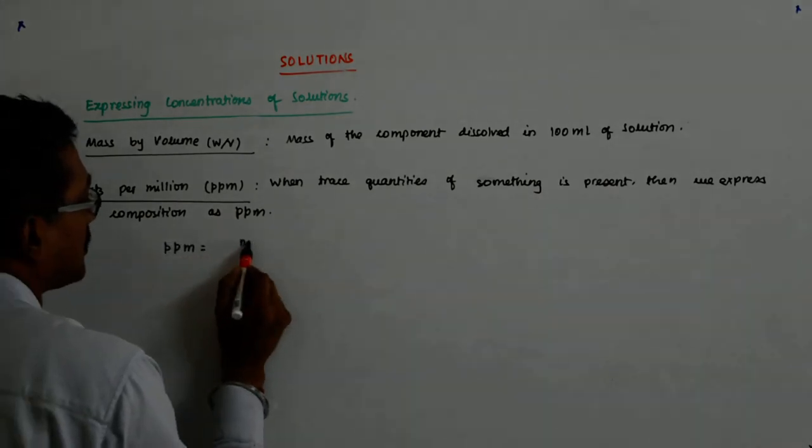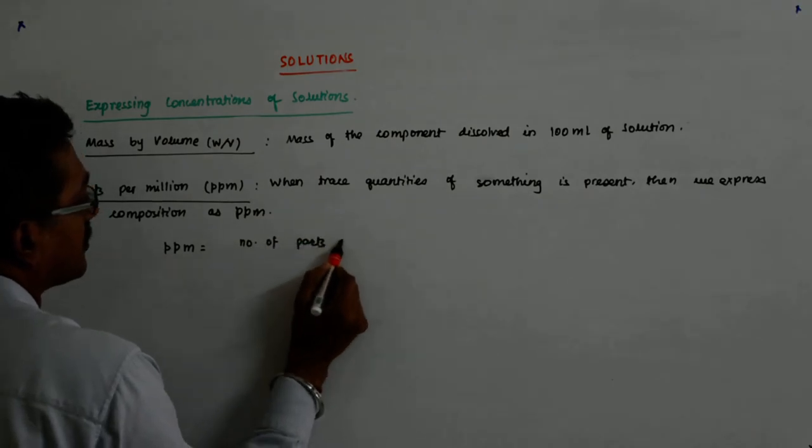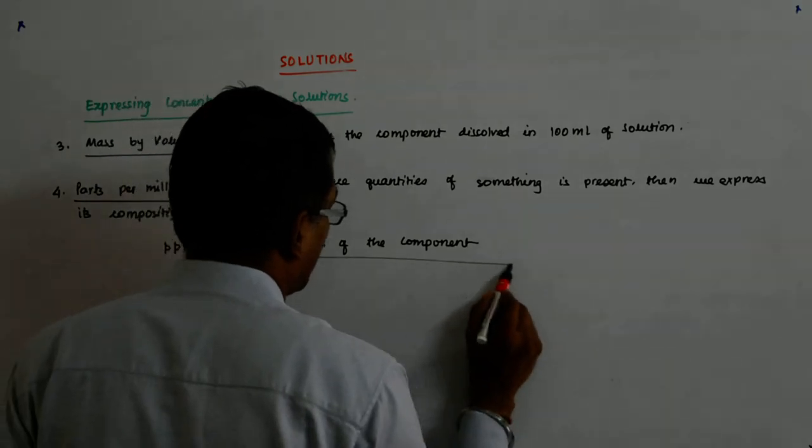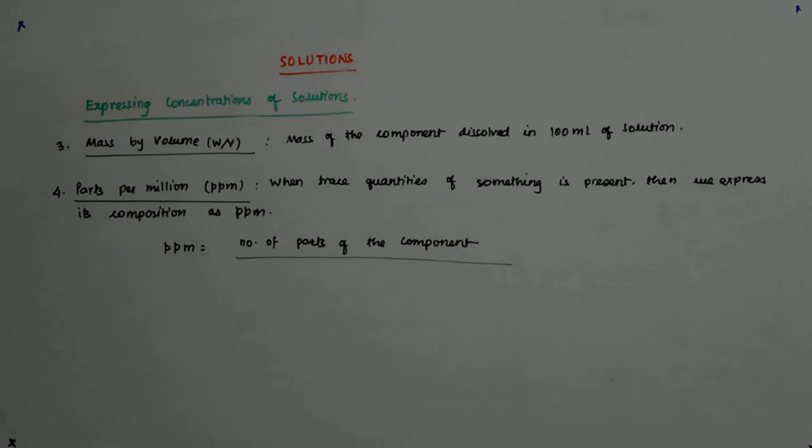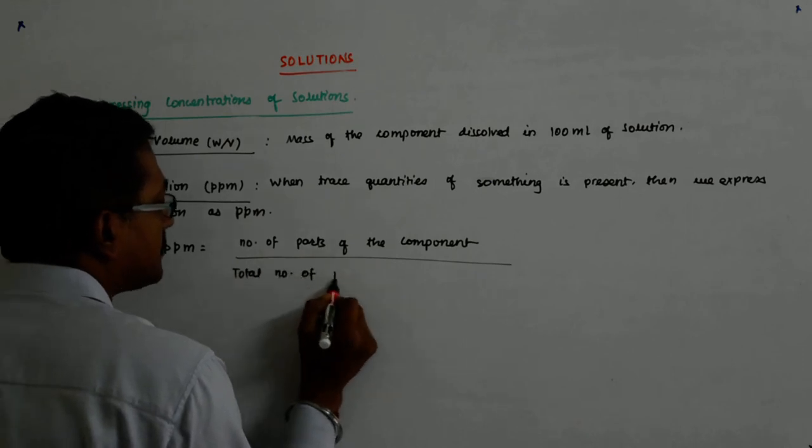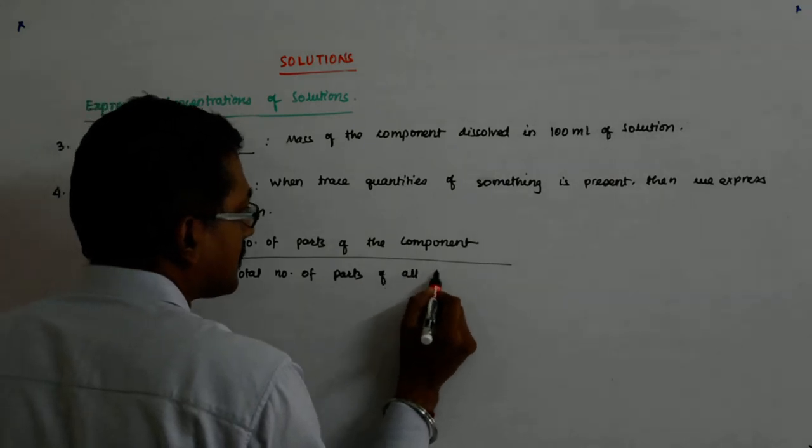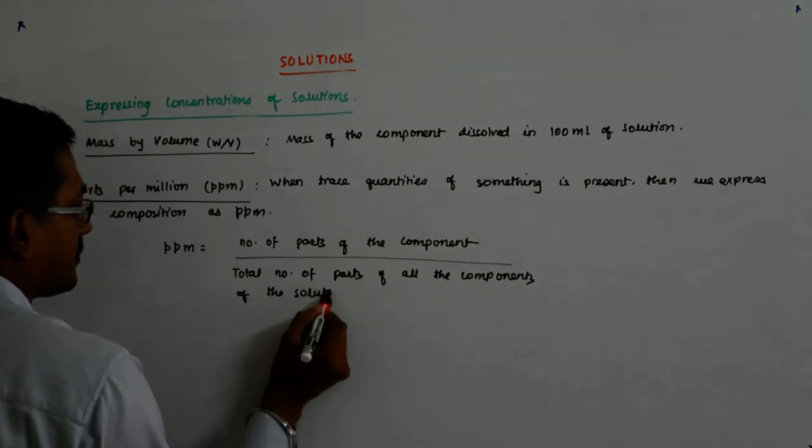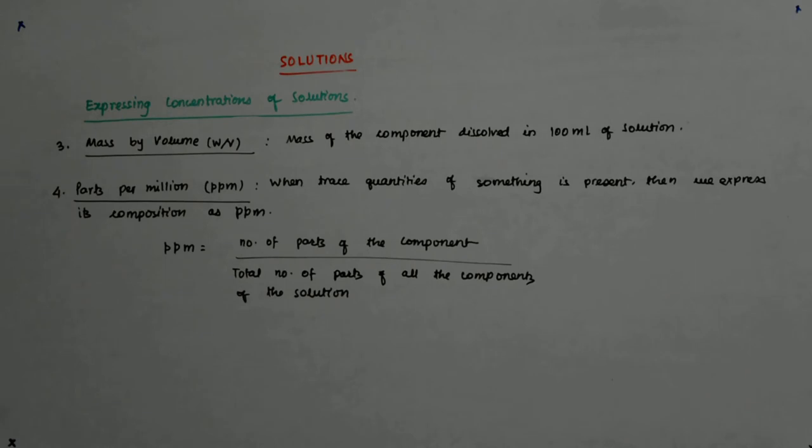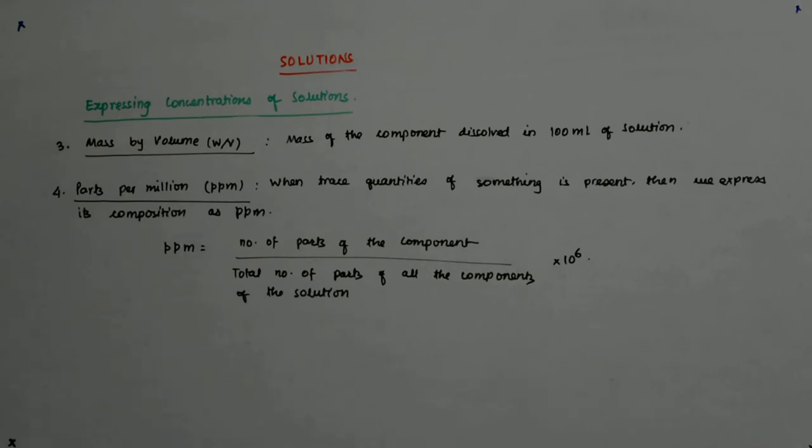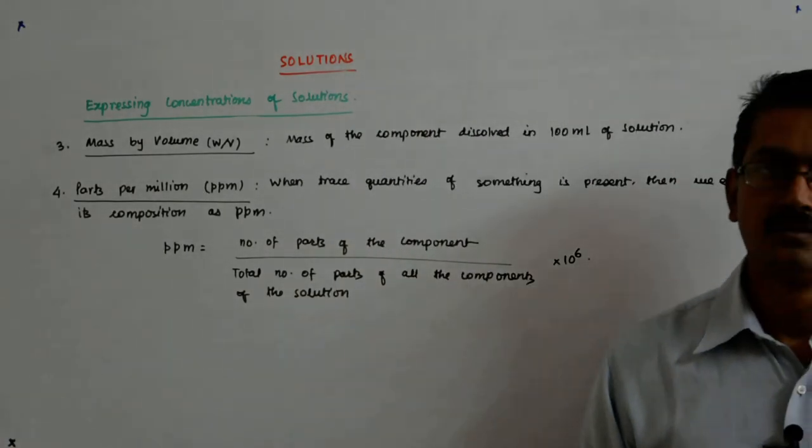PPM is equal to the number of parts of the component upon the total number of parts of all the components of the solution, into 10 to the power 6, per million.